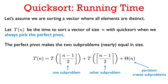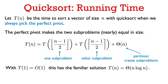One sub-problem has size ⌊(n-1)/2⌋ and one has size ⌈(n-1)/2⌉. We also have the time to create the sub-problems via the partition function, which costs Θ(n). This gives the same recurrence relation as merge sort, whose solution is Θ(n log n).